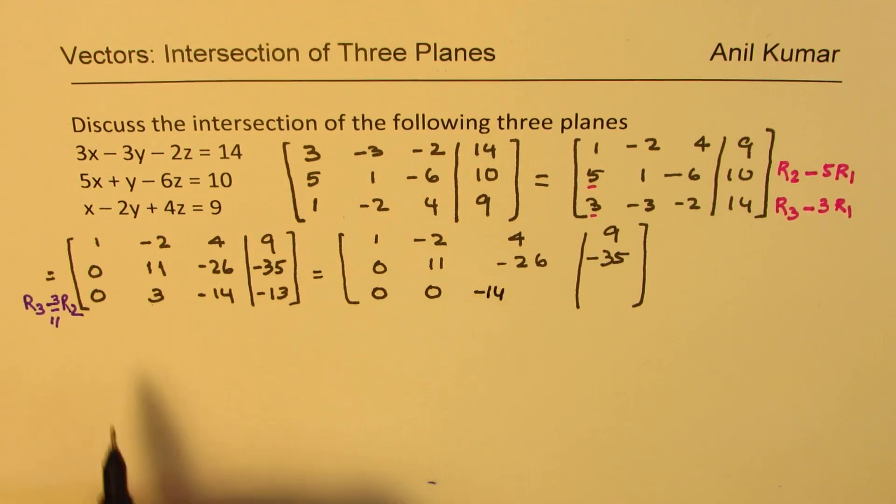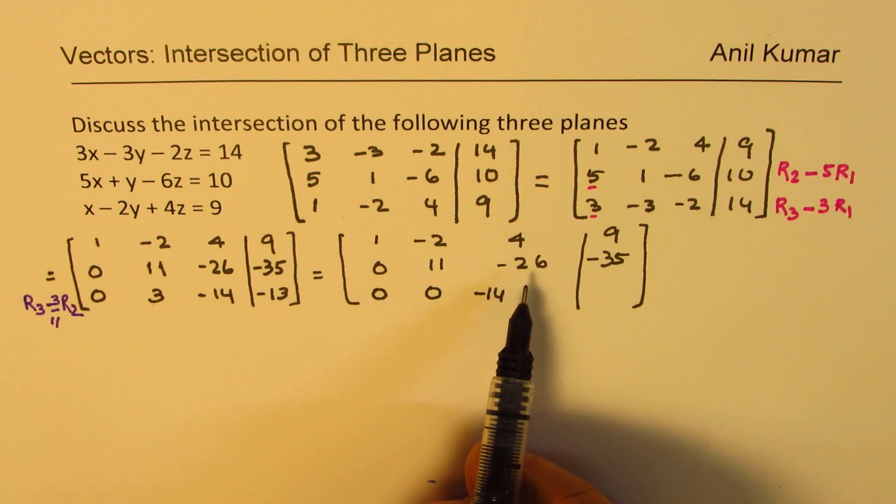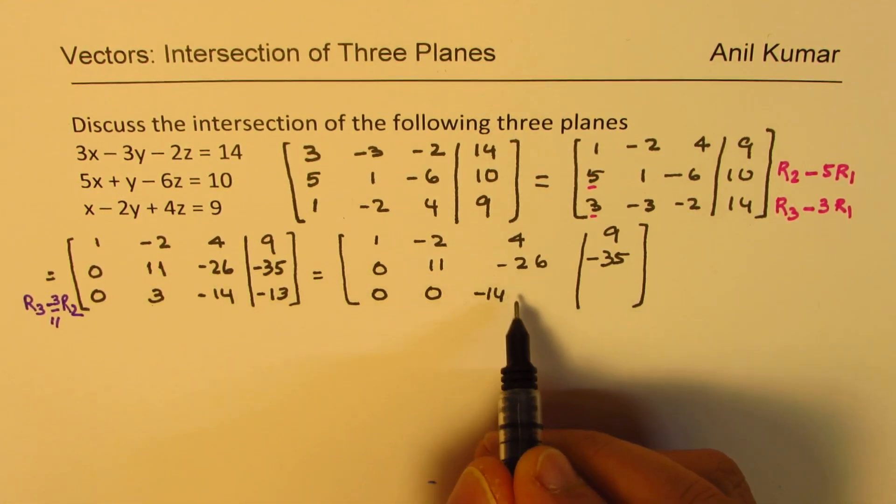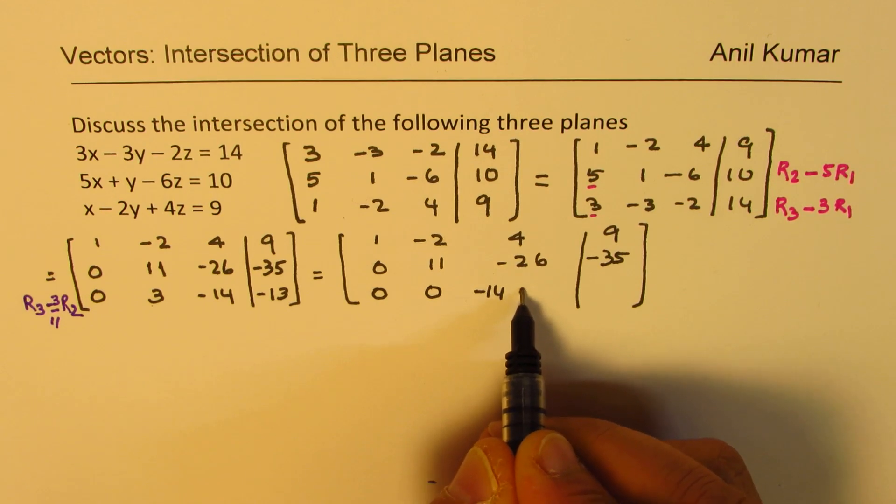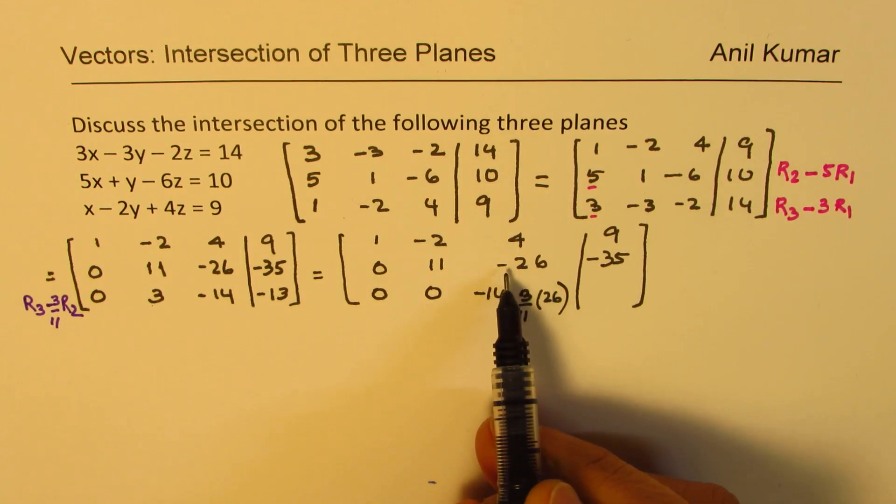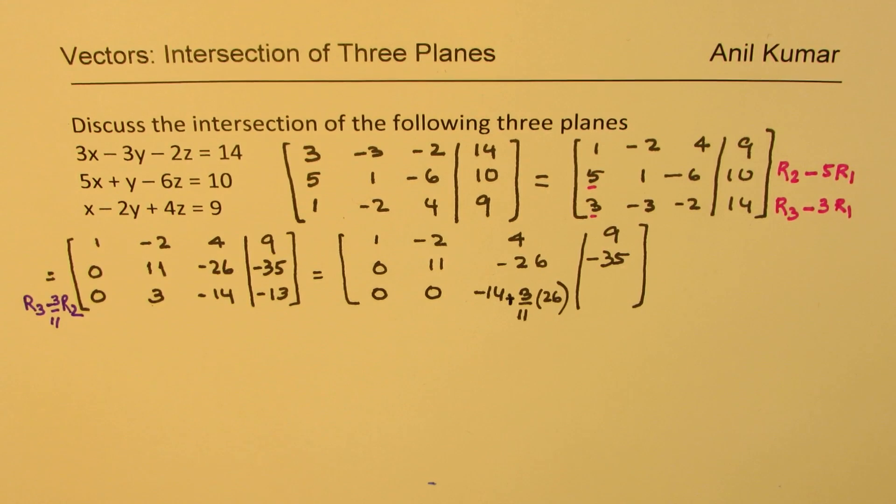So it is minus 14. We have to multiply 26 by 3 over 11 and then take away. So when you multiply this by 3 over 11 times 26, and this is negative, so when you take away, it actually becomes positive. So this becomes minus 14 plus 3 over 11 of 26.